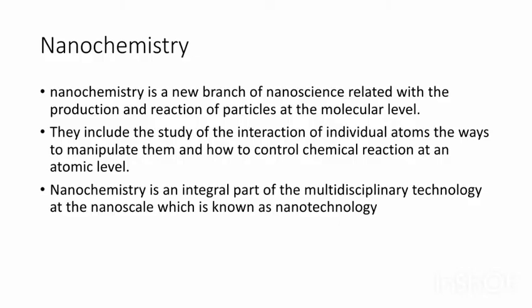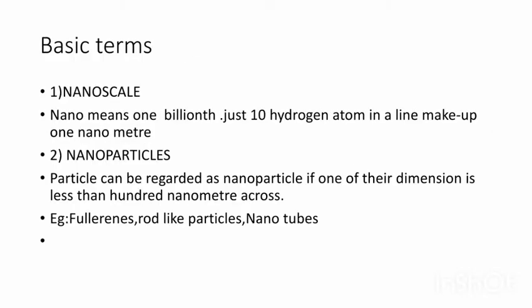Nanotechnology is a multidisciplinary technology and nanochemistry is an integral part of it. Now let's discuss some basic terms in nanochemistry. The first term is nanoscale. Nano means one billionth, that is 10 raised to minus 9 meters. One nanometer is the width of about 10 hydrogen atoms in a line.